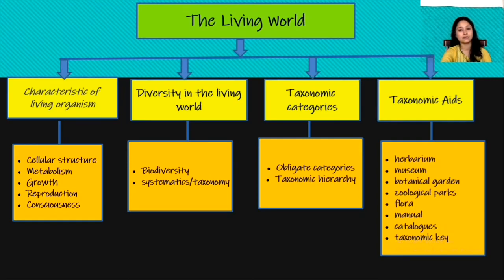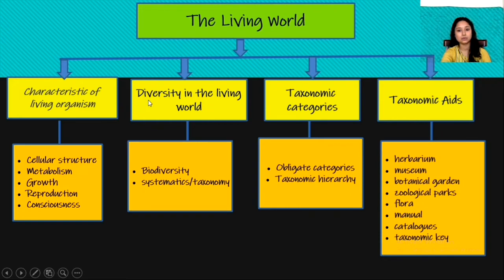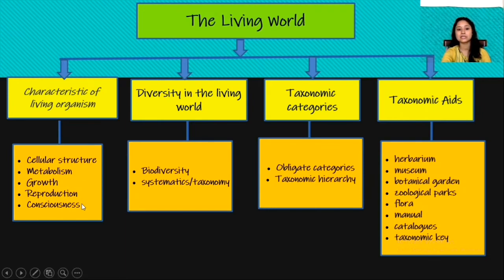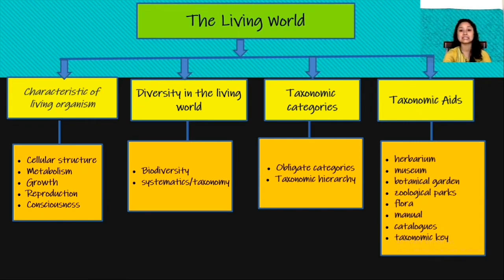The Living World is classified into 4 major topics: characteristics of living organisms, diversity in the living world, taxonomic categories, and taxonomic aids. Under characteristics of living organisms, we will study 5 characteristics: cellular structure, metabolism, growth, reproduction, and consciousness.